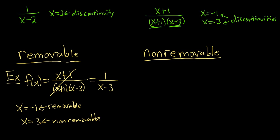Removable discontinuities can be removed by canceling, and non-removable discontinuities cannot be removed. The function still isn't defined there, so it's not continuous.